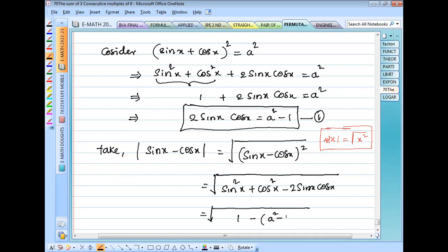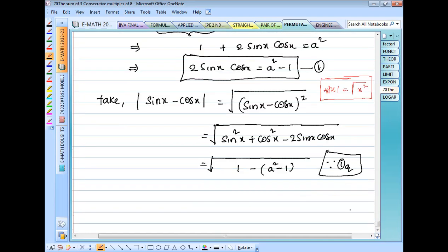We just calculated from equation 1. Since from first equation it was 2sinxcosx was a² - 1, now do calculation for that. √(1 - (a² - 1)) = √(1 - a² + 1) = √(2 - a²) under root. This was the answer for this question.